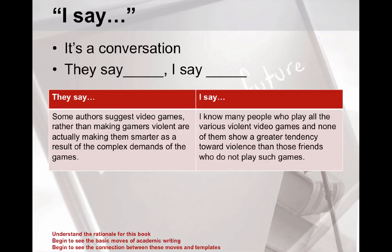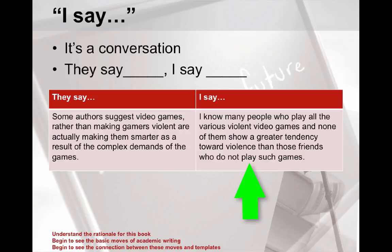After you establish 'they say,' you need to give the 'I say.' It's a conversation — they say this, I say this. For example in a two-column layout: 'They say: some authors suggest video games, rather than making gamers violent, are actually making them smarter as a result of the complex demands of the games.' 'I say: I know many people who play violent video games and none show a greater tendency toward violence than friends who don't.' That back and forth — that conversation at the party — is what you're doing in academic and real-world writing.